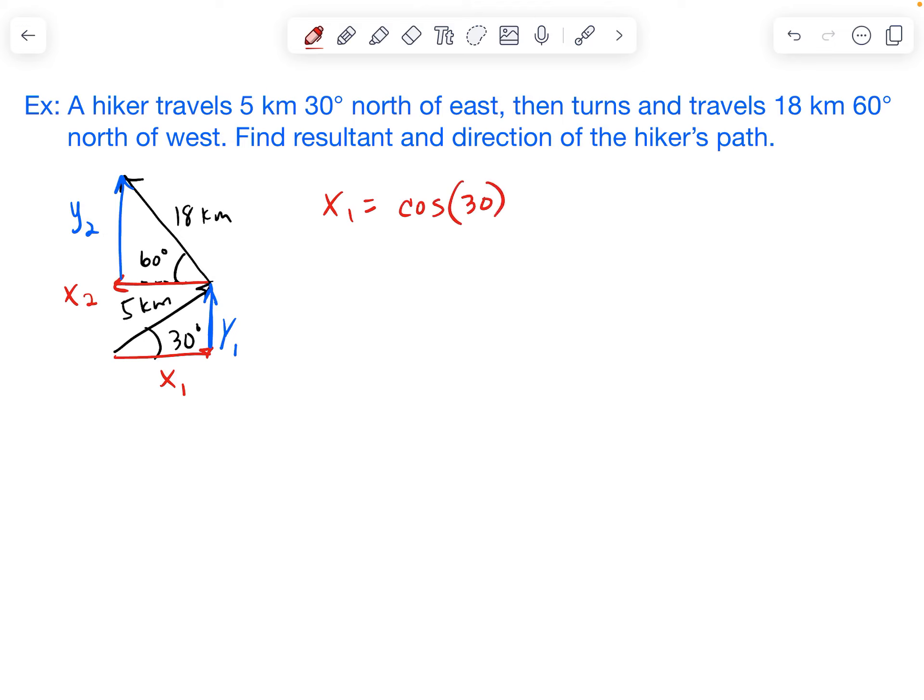So cosine of our angle times the hypotenuse. And then for x2, same thing, cosine of our angle, 60 there, and the hypotenuse there is 18.